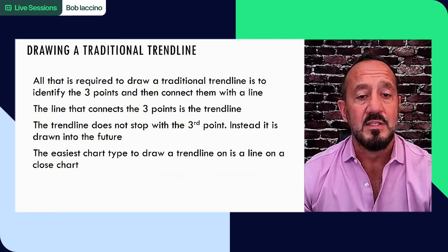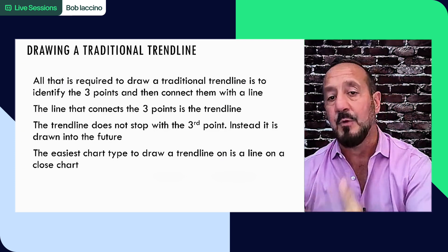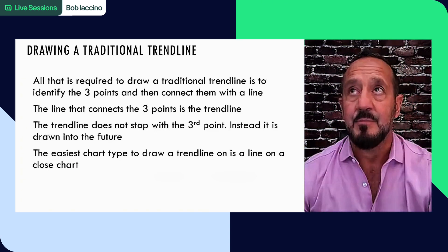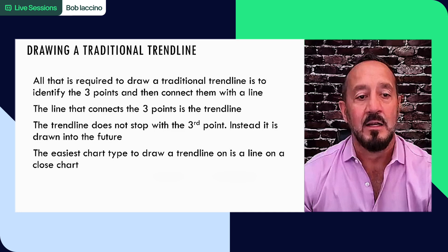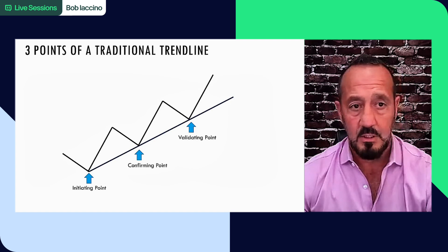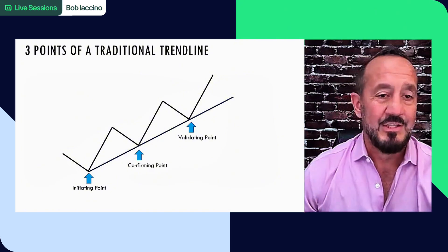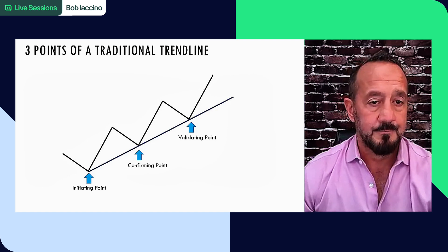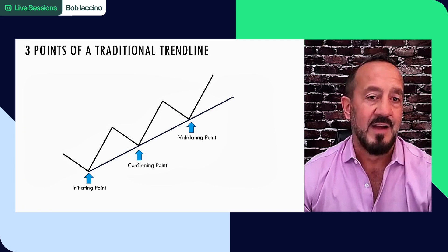The trend line does not always stop with the third point. Instead, the trend line is drawn into the future to give us a possible resistance or support level if the trend continues at its same strength level. The easiest chart type to draw a trend line in is a line on close chart. Here's an example - three points of a trend line. You've got a simple line on close chart where each dot on that chart is just a closing price. Here you have an initiating point, a confirming point, and a validating point. This is a valid traditional trend line.